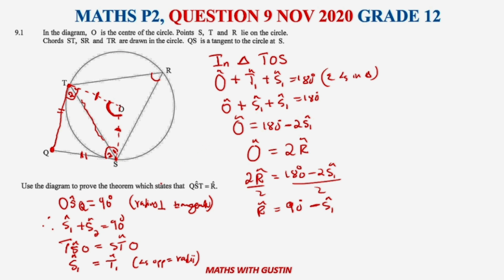Once we have R equals 90 minus S1, and we know S1 plus S2 equals 90, it follows that S2 equals 90 minus S1. Therefore S2 equals R. The reason is the exterior angle of a cyclic quadrilateral. That's how you deal with a question like this one.